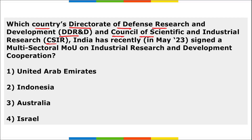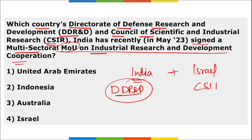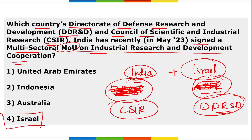The MOU on industrial research and development between India and Israel was signed between CSIR — the Council of Scientific and Industrial Research — from India, and the Department of Defense Research and Development from Israel. These two organizations came together to increase industrial research collaboration and share information.